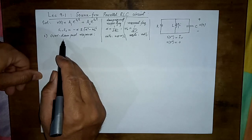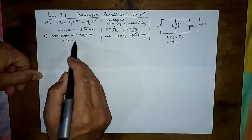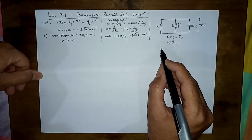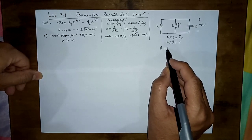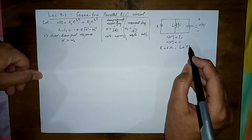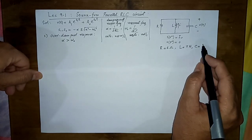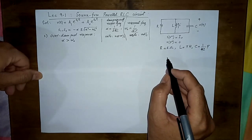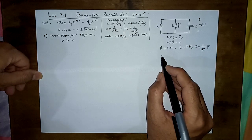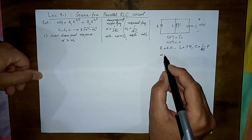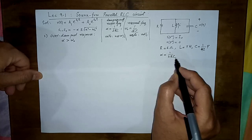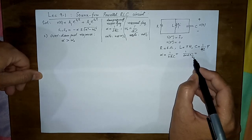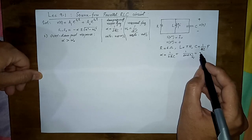The first case is the over-damped response, where alpha is greater than omega_naught, or equivalently alpha-squared is greater than omega_naught-squared. For example, take R = 6 ohms, L = 7 henries, and C = 1/42 farads — large values, but useful for illustration. Computing alpha = 1/(2RC) = 1/(2 × 6 × 1/42), we get alpha equal to 3.5.